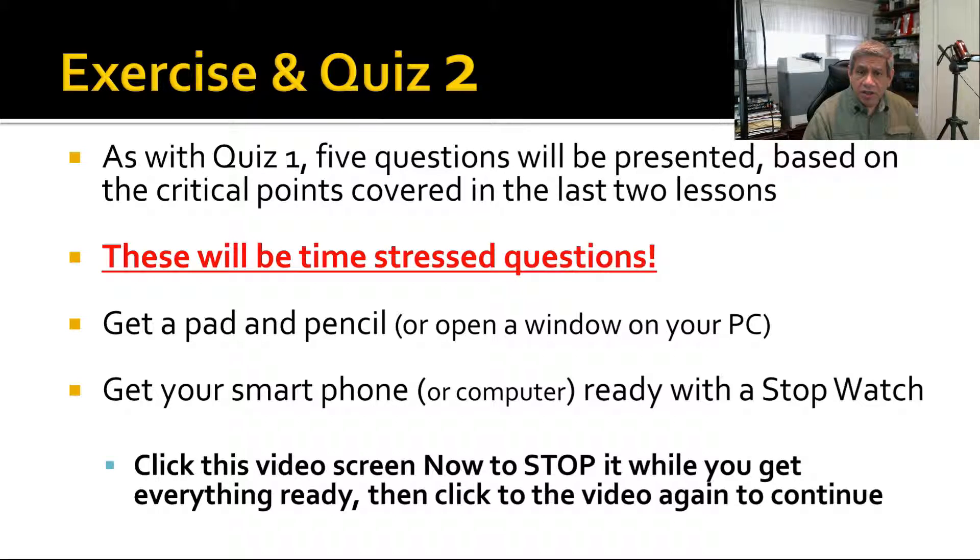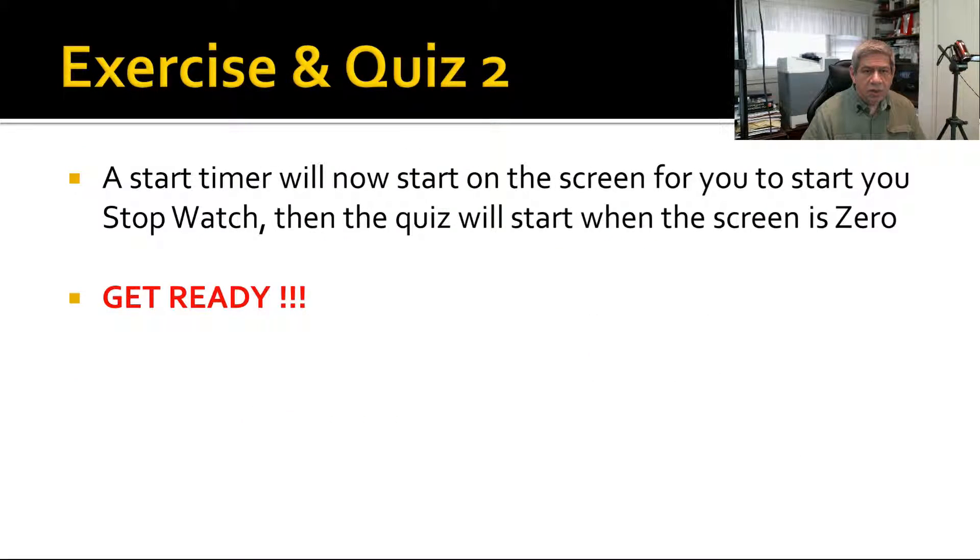With that, I would like to now give you quiz number two. As with quiz number one, I will give you five questions based on the critical points covered in the last two lessons—not just the last one, the last two videos, this one and the one prior. These will be stressed questions. Get a pad and pencil or open a window on your PC. Get your smartphone or computer ready with a stopwatch. Click on this video once you have everything together, because once you click on it, the test will start. So click on the screen now to stop it, and then click on it again to get it to go. The start timer will now start on the screen for you to start your stopwatch, then the quiz will start when the screen reaches zero.